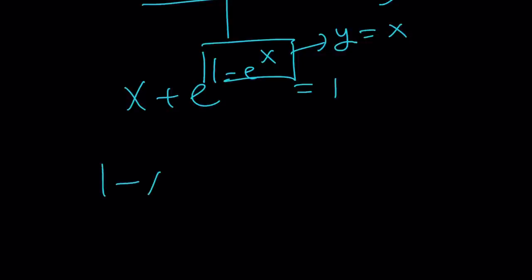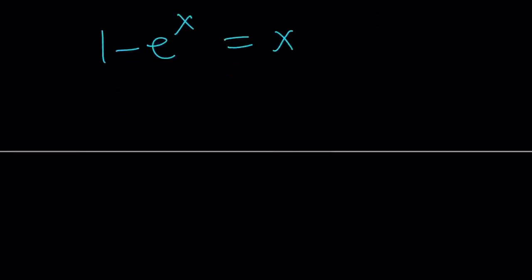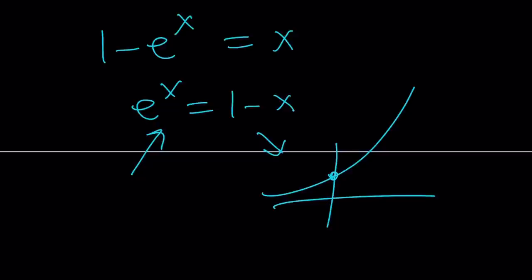That's our function. But more interestingly, let's go ahead and take a look at another function. We had originally x plus e to the 1 minus e to the x equals 1. And from here we got the solution. We said call this y, and then we got y equals x, which meant 1 minus e to the x equals x. We could also look at it this way: e to the x equals 1 minus x. Now notice that one of these functions is increasing, the other one is decreasing, so they're going to intersect at a single point. At 0 they're both going to go through 1. And x equals 0 is going to be the only solution for this equation.